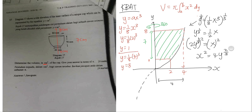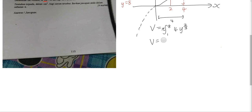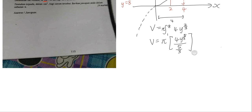After getting that, I try to find the volume using the formula. The volume equals π times the integral from 1 to 8 of 4y^(2/3) dy, because it rotates 360 degrees. Then we just simplify and integrate. Integration tells us to add 1 to the power: 2/3 plus 1 gives 5/3, divided by 5/3. So we get 4 times y^(5/3) divided by (5/3), from 1 to 8.